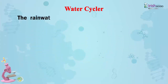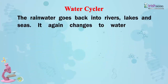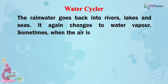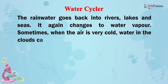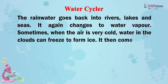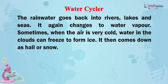This is called precipitation. The rainwater goes back into rivers, lakes, and seas, and again changes to water vapour. Sometimes, when the air is very cold, water in the clouds can freeze to form ice. It then comes down as hail or snow.